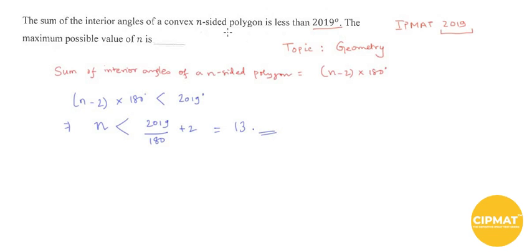what we can write is the maximum value of n is 13. So you need to write 13 here as the answer and you will be getting full credits for this.